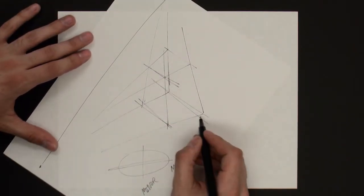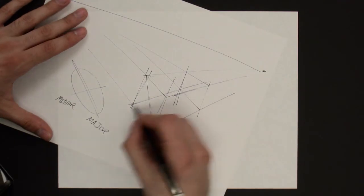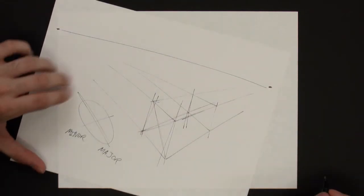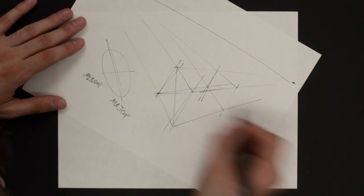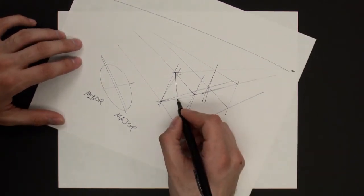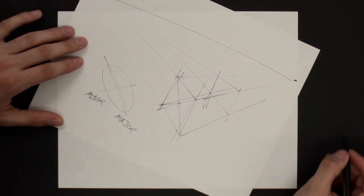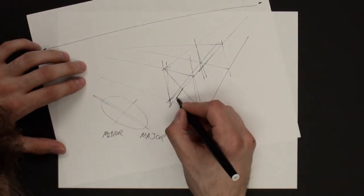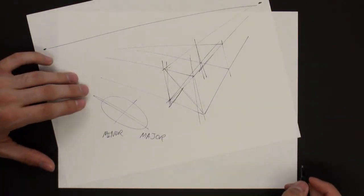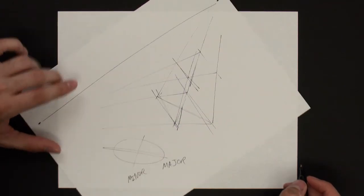So to find out where the center is, we're just going to drop some diagonals in. So there's our diagonals. And where they meet is the center of the square. So we're just going to draw a straight line through that. And so this line is going to be where our minor axis of the ellipse ends up.